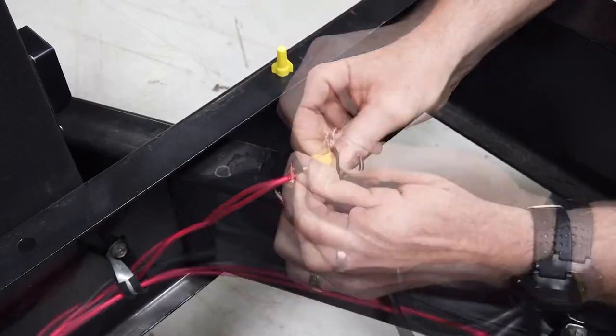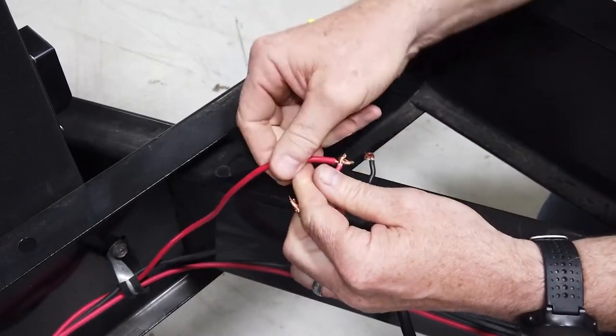Remove the two weatherproof wire nuts joining the motor to the harness, then pull the wires free of their splices.